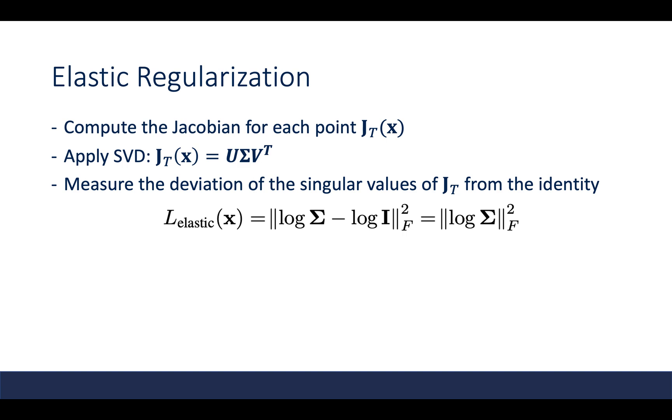Specifically, they want to achieve local rigidity. To achieve this, they compute the Jacobian J_τ of each point x that describes the best linear approximation of the transformation at each point.